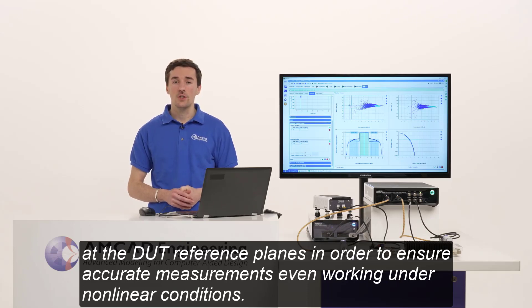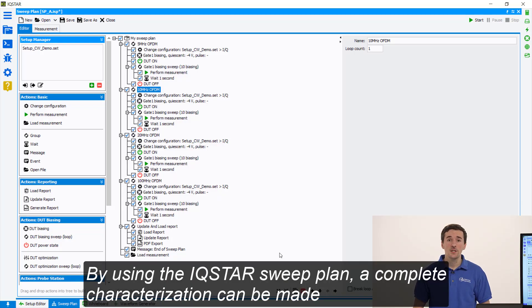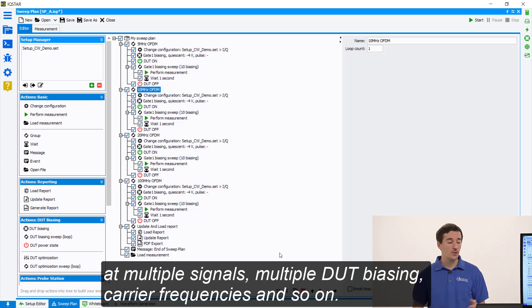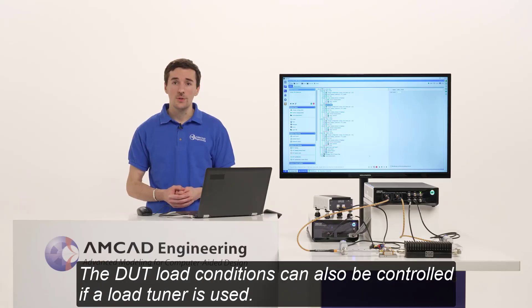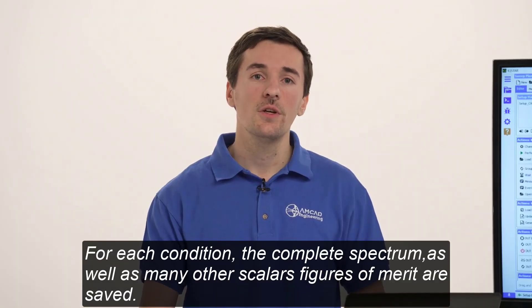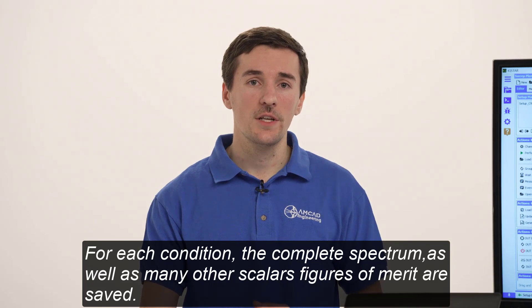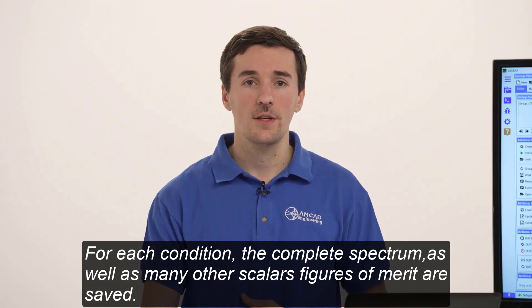By using the IQSTAR test plan, a complete characterization can be made at multiple signals, multiple DUT biasing, carrier frequencies, and so on. The DUT load conditions can also be controlled if a load tuner is used. For each condition, a complete spectrum as well as many other scalar figures of merit are saved.